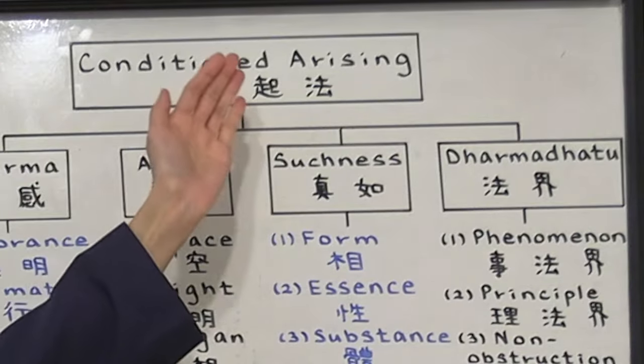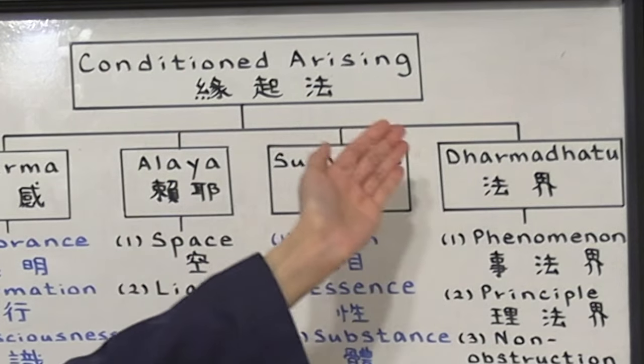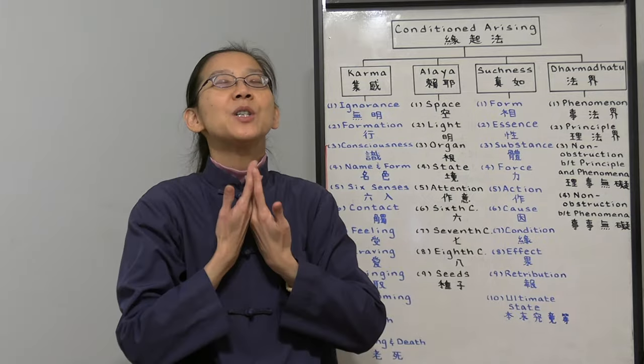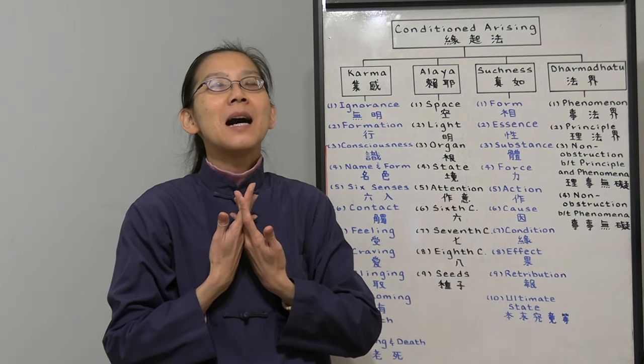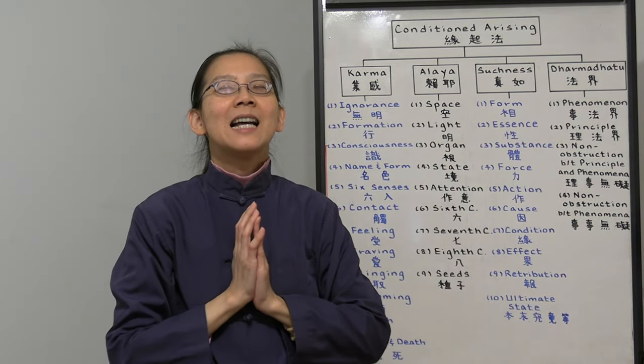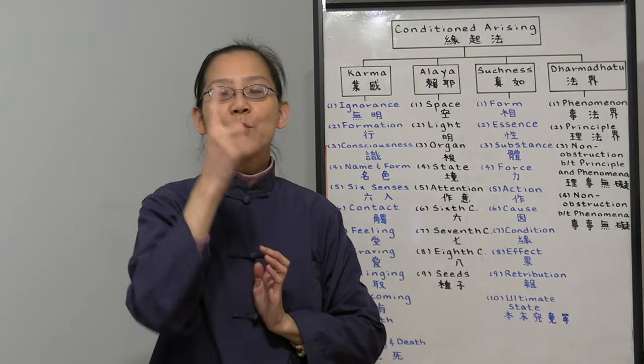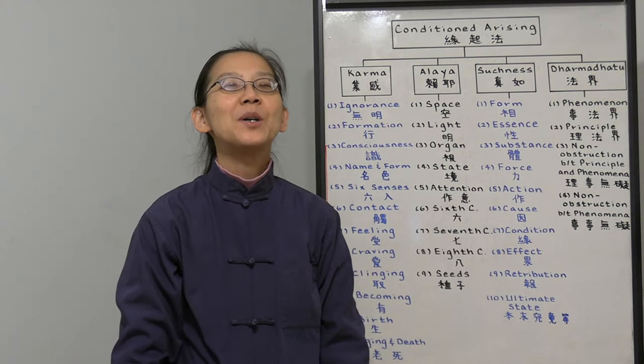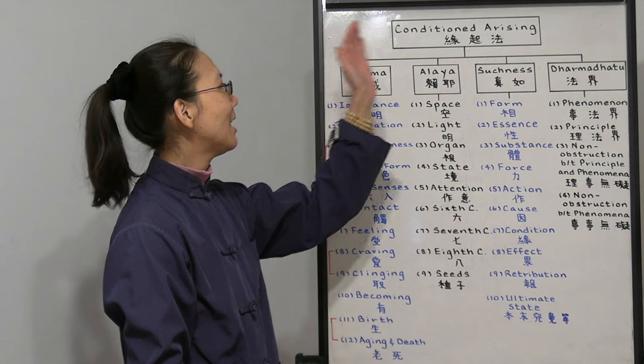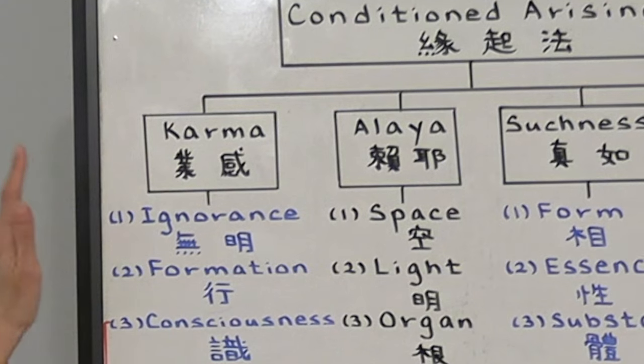Lastly, condition arising based on the Dharma Dhatu, we call it the Dharma Rim. Our one true mind. The one mind is the universe. The universe is our mind. It's the reality of one mind, the world of the Buddha.